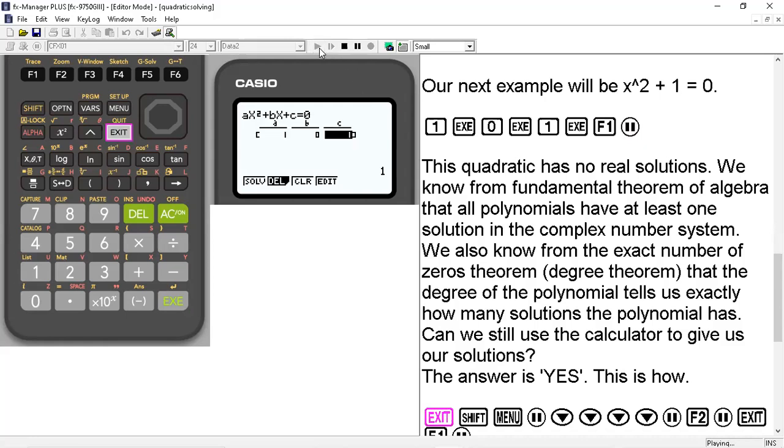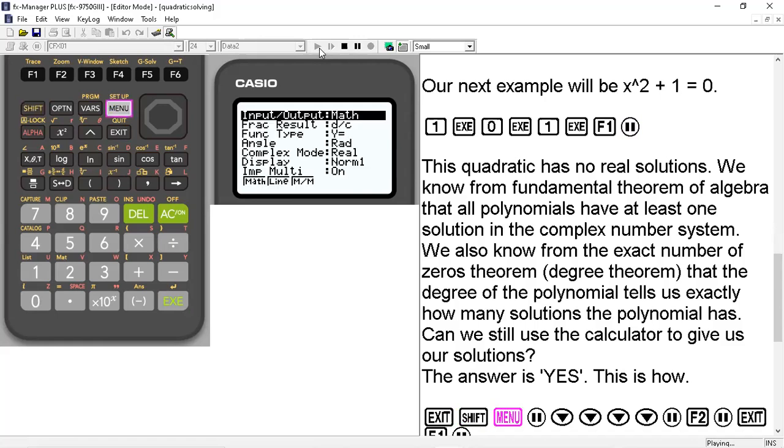So we go ahead and hit exit, and then we hit shift and menu, and this takes us to the setup. In the setup here, we have input, output, math. We have fractional results. We have function type, y =, that's the standard rectangular form. Angle here is rad, that's radian measure for angles. Display is normal 1, and this complex mode, this is the one that we're after. Complex mode is listed as real. What that means is that only real solutions will appear. So I'm going to go ahead and scroll down until I get to that complex mode. And what I'm going to do is I'm going to look at these icons at the bottom. It says real, A + Bi, or R angle θ.